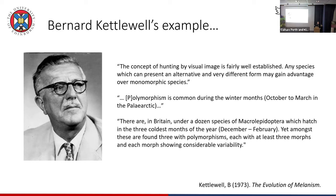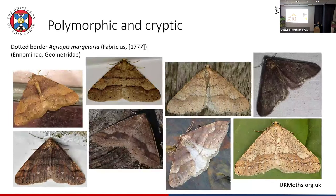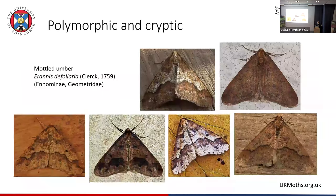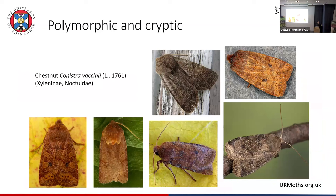Some examples: the dotted border — they're all kind of similar but also different. The mottled umber — another good example. You can see how they all cluster together being generally camouflaged, but again all different colour morphs. A chestnut moth — generally similar but some variation between them. It's very different from the black and white polymorphism mentioned earlier — it's not really discrete; they kind of blend into one another.